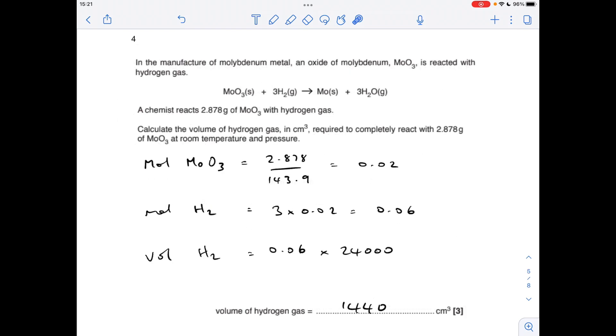Moving on to number four. The first thing we've got to do is get the moles of molybdenum oxide, so just mass over MR: 0.02. The moles of hydrogen that's going to react with it is going to be three times as many: 0.06. And the volume of hydrogen at RTP in centimetres cubed is multiplied by 24,000, which is the molar gas volume in centimetres cubed: 1,440 centimetres cubed.